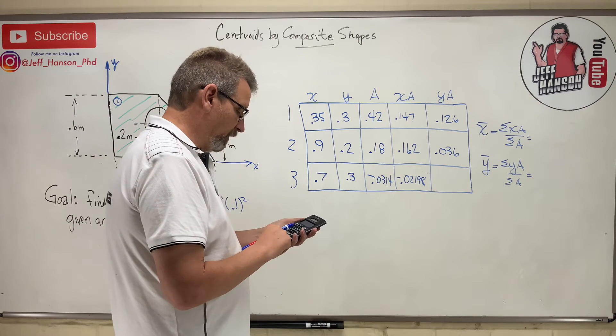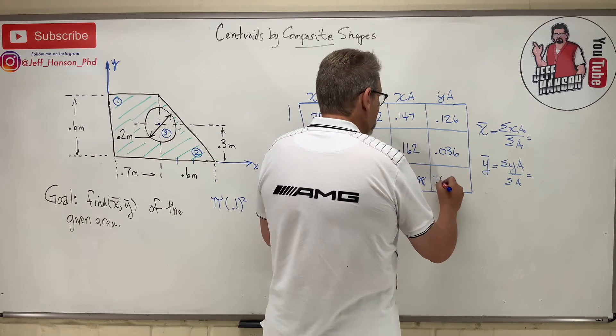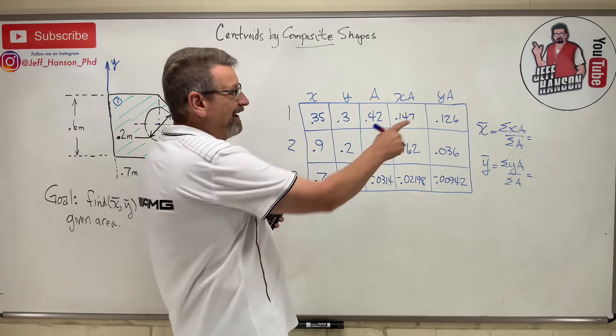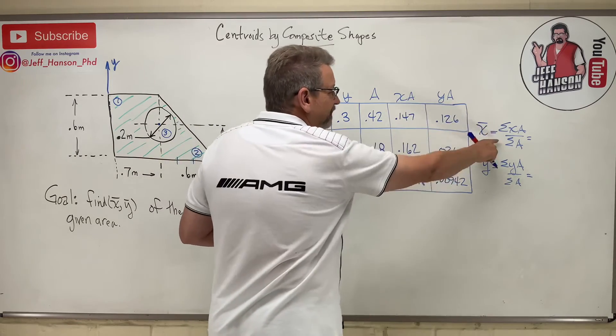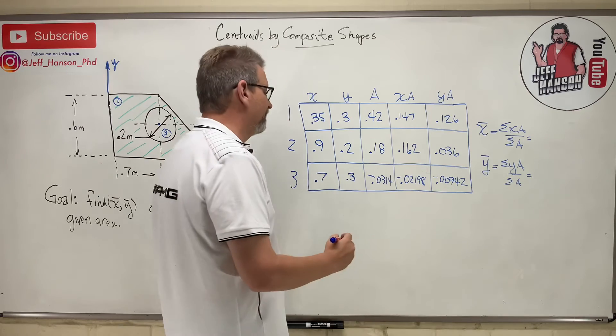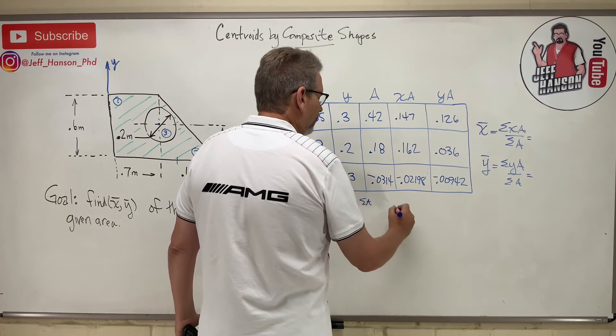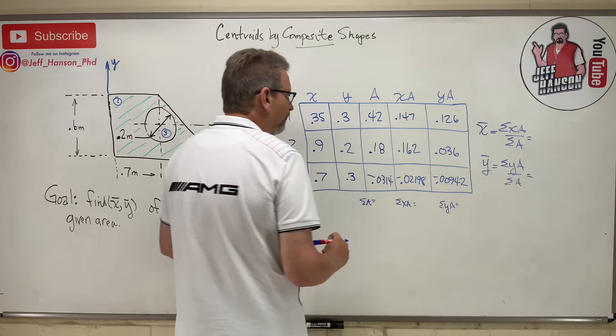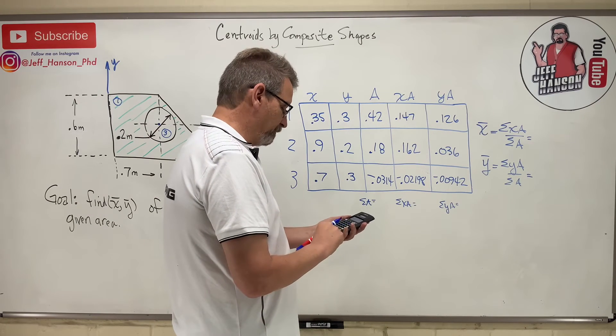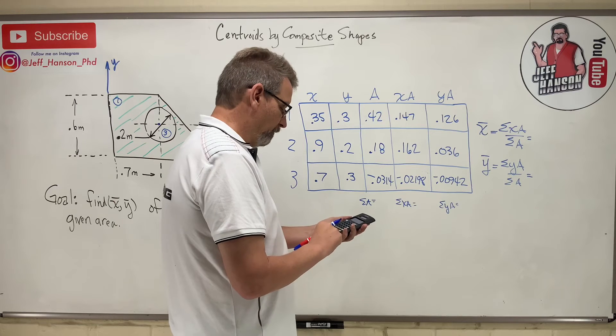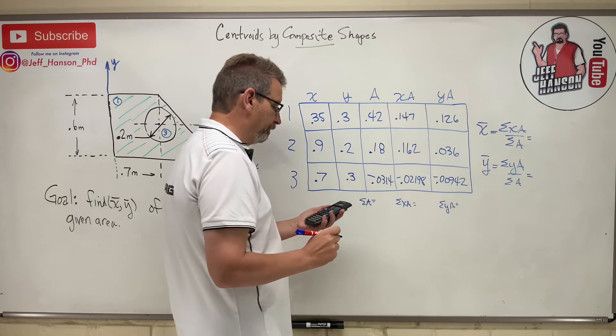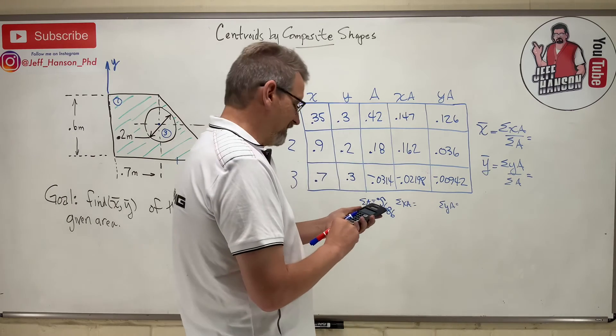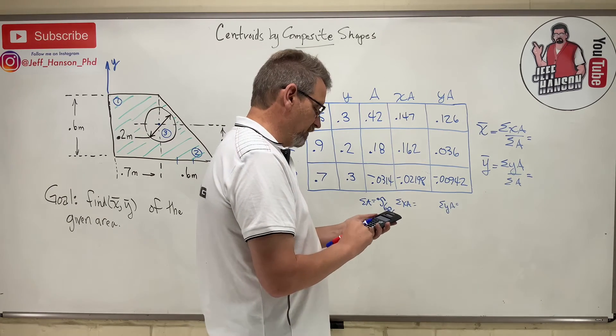All right, so what we need over there is we need the sum of the X·A's and we need the sum of the A's and we need the sum of the Y·A's, don't we? Well, that's easy. Sum of the A's comes from this column, sum of the X·A's come from that column. All I gotta do is add this stuff up. So here we go: 0.42 plus 0.18 minus 0.0314 equals 0.5686. The sum of the X·A's: 0.147 plus 0.162 minus 0.02198 is 0.287.